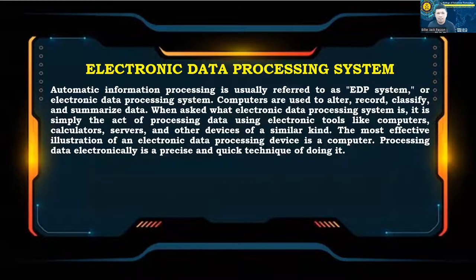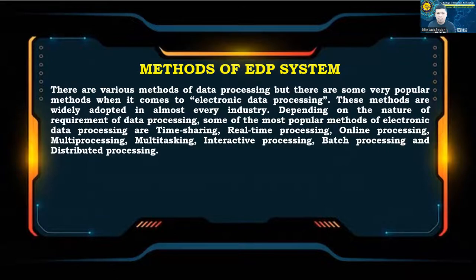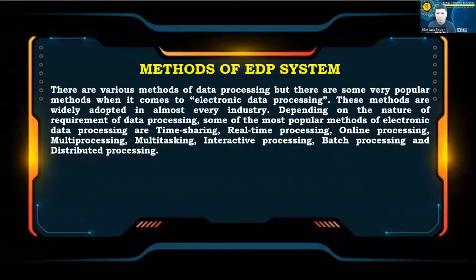Automatic information processing is usually referred to as an EDP system, or electronic data processing system. Computers are used to alter, record, classify, and summarize data. The EDP system is simply the act of processing data using electronic tools like computers, calculators, servers, and other devices. The most effective illustration of an electronic data processing device is a computer. Some of the most popular methods of electronic data processing are: time sharing, real-time processing, online processing, multiprocessing, multitasking, interactive processing, batch processing, and distributed processing.